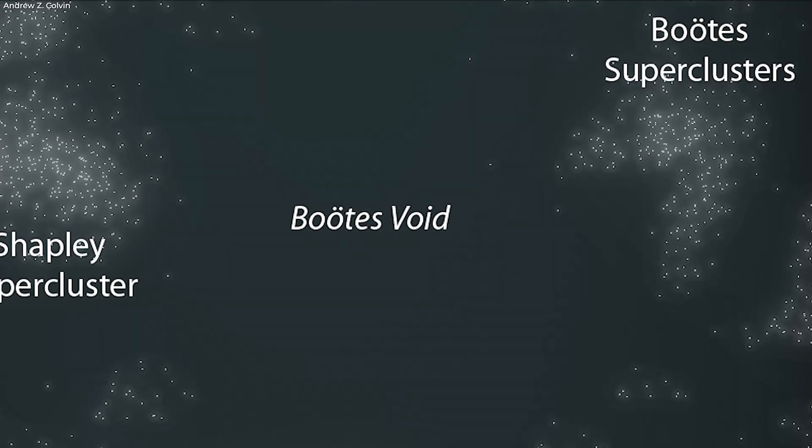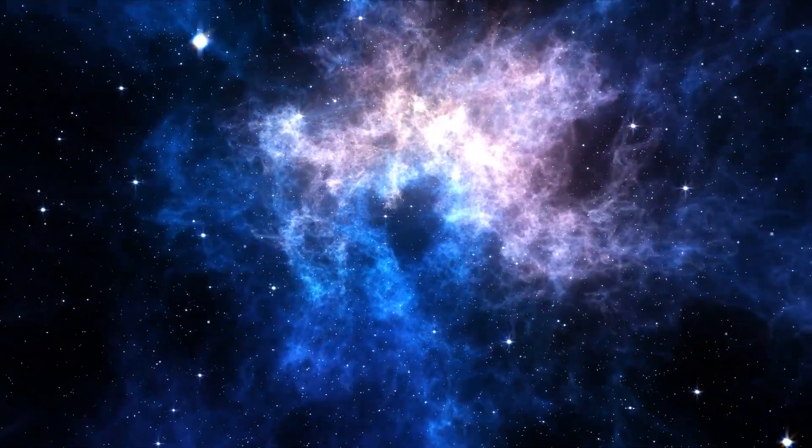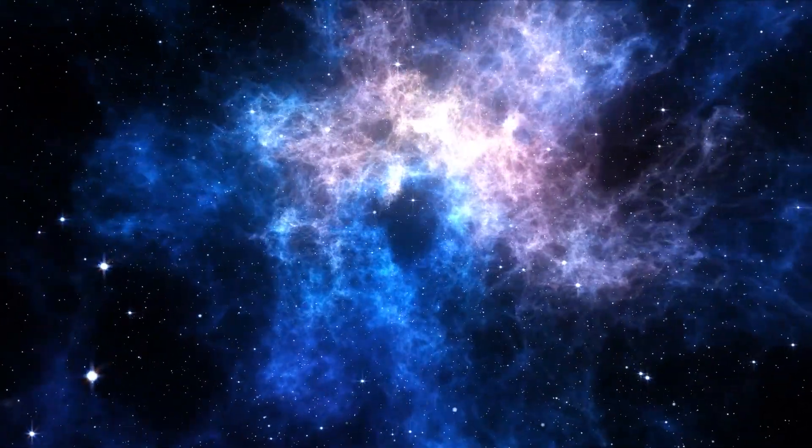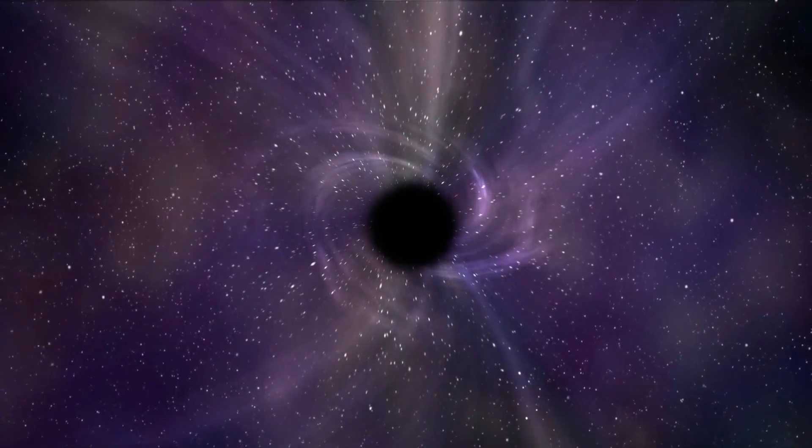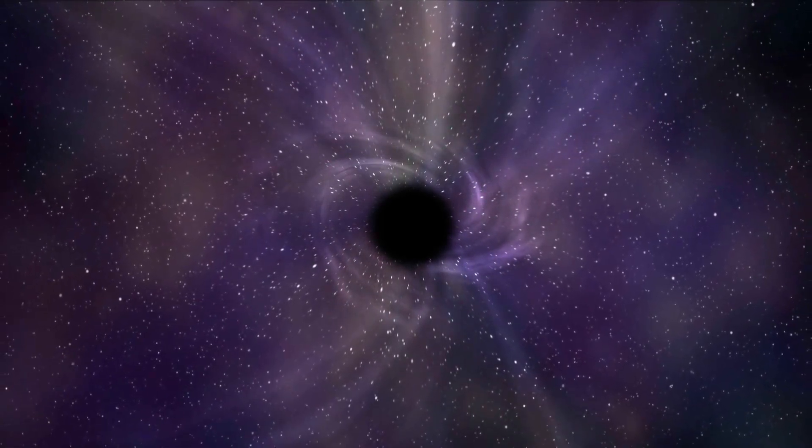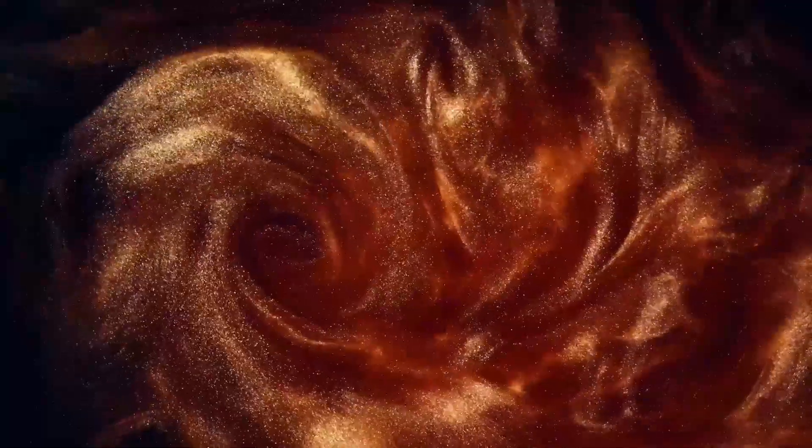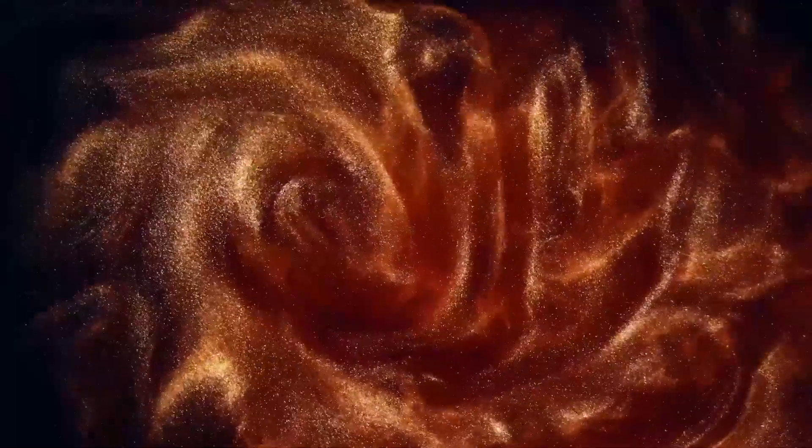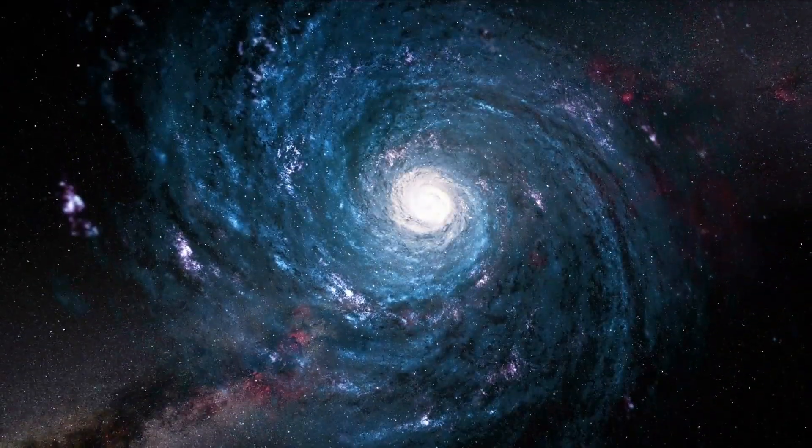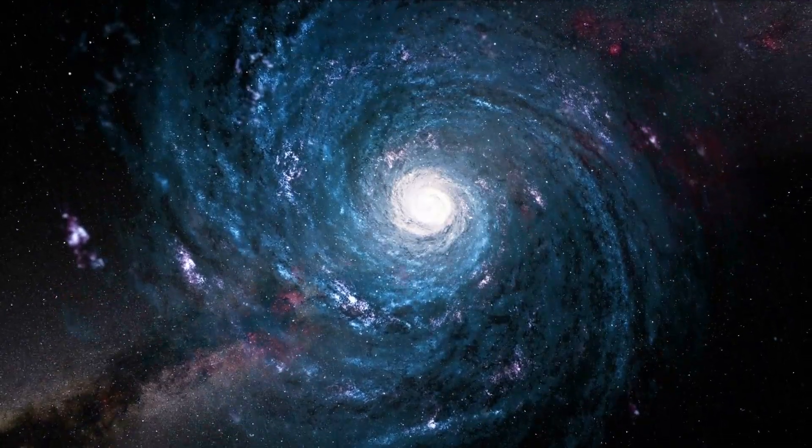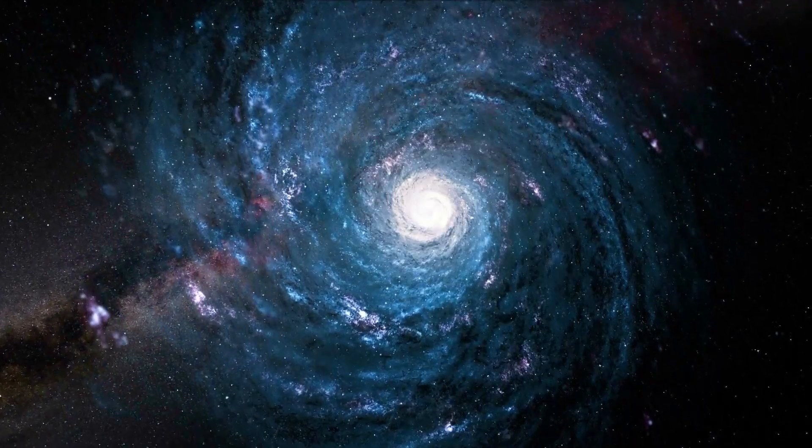However, this doesn't explain why the Boötes emptiness exists, mostly because there hasn't been enough time since the universe began for mere gravitational forces to clear out a space of that size. The need for an explanation has given rise to a new theory, one which suggests that supervoids are caused by the intermingling of smaller ones. Scientists have noticed that galaxies inside of voids take the curious shape of a tubular structure, likely an important clue.